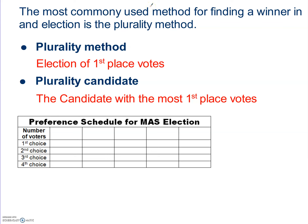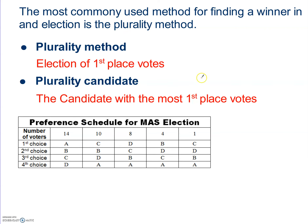Let's take a look. We're going to go back to our preference schedule for the math appreciation society that we used in the previous lesson. I have it all filled in here. Remember, we had the total number of voters and how each voter filled out their ballot. The first thing we want to figure out is who is the plurality candidate — the candidate with the most first place votes.